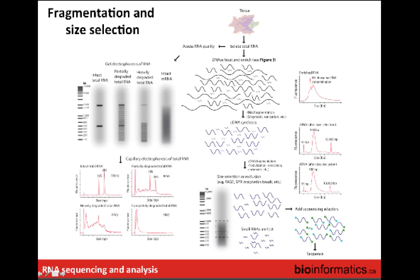Once you've assessed quality, it's typical to do a DNase treatment to remove genomic DNA that may still be in your sample, then some kind of enrichment. Then you do cDNA synthesis, size selection, and add sequencing adapters. At this point, small RNAs are typically lost as you're selecting for fragments above some size. After size selection you wind up with fragments with sequencing adapters attached — this library is what goes on to the machine for sequencing.